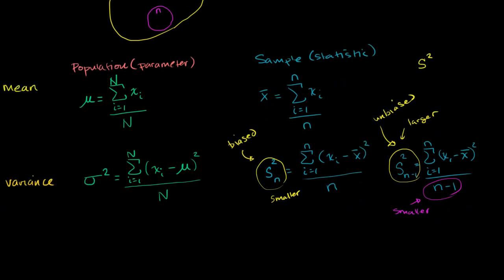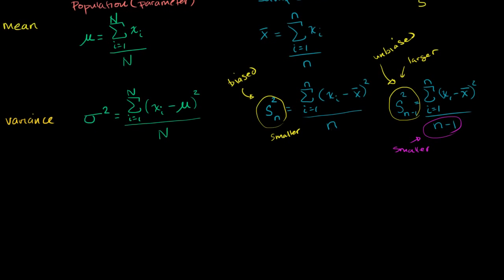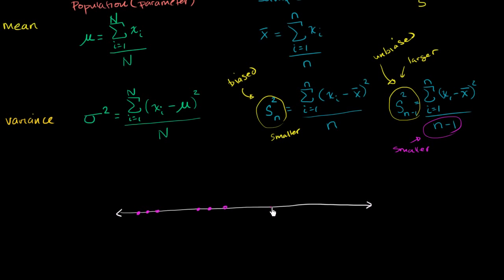Let's think about why this estimate would be biased and why we might want a larger estimate. Let's imagine all of the data in a population plotted on a number line. I'll plot all the data points — so these are just points on the number line representing the entire population.